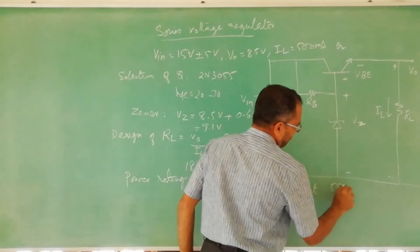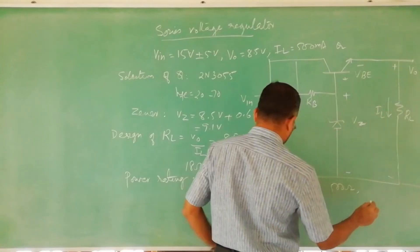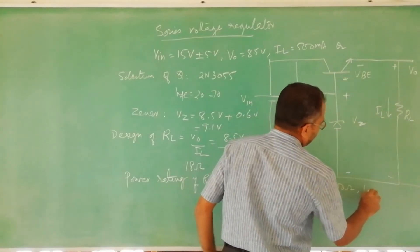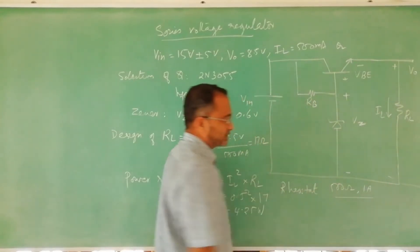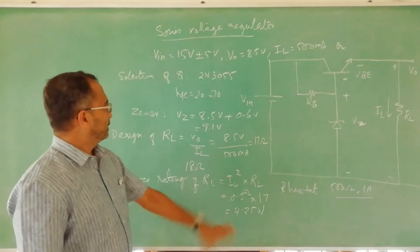Alternatively, we can use a rheostat of 500 ohms with a 1 ampere or 2 ampere capacity.